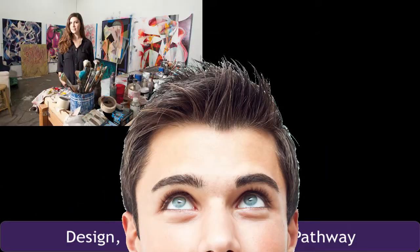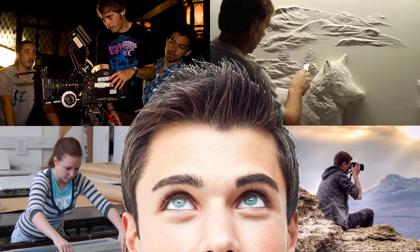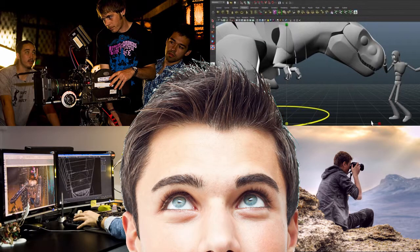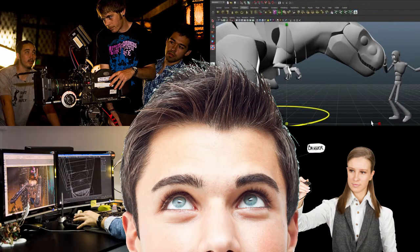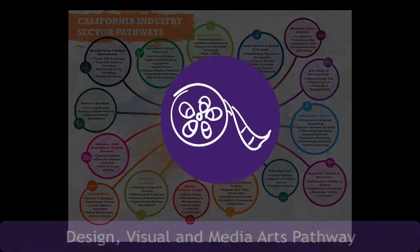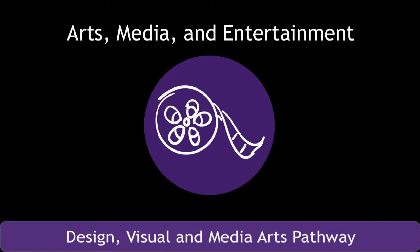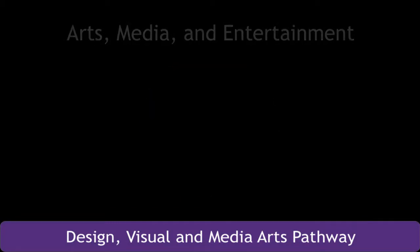So how do you start your journey to a profession — a career in design, visual, and media art? It begins by choosing a pathway. The California Department of Education has identified 15 industry sectors and 58 pathways based upon the type of work done. The design, visual, and media pathway falls under the arts, media, and entertainment industry sector.